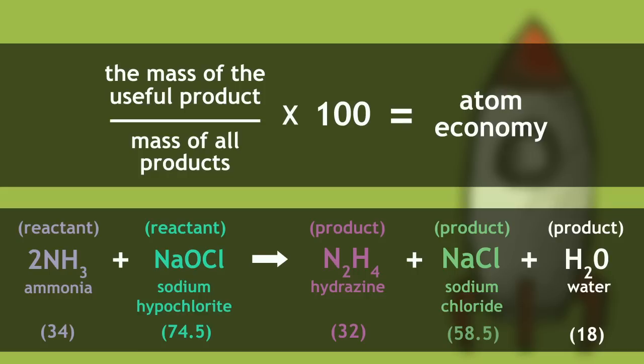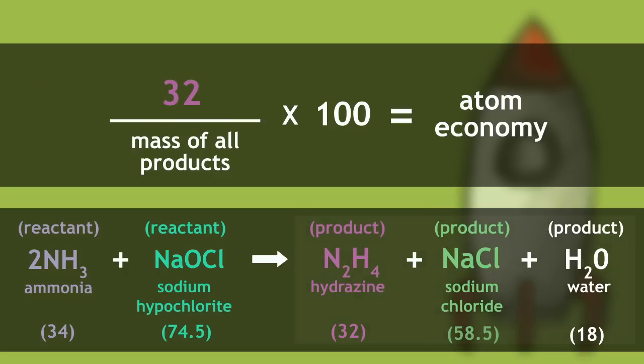First, we need to identify our useful product. This is hydrazine, N2H4. It has a mass of 32. The total sum of all the products, including hydrazine, is 108.5.